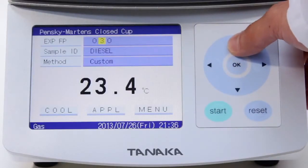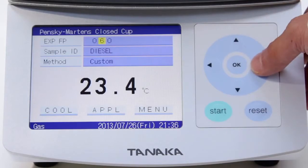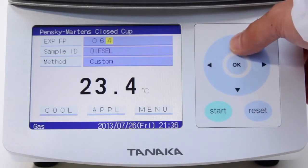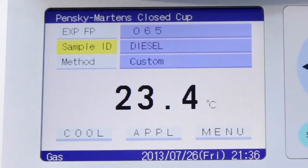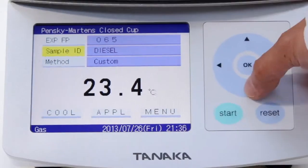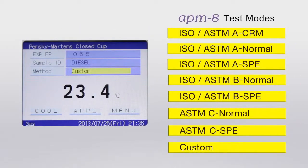There are only 3 steps to perform before starting a test. Enter the expected flashpoint. Enter a sample ID. Then select one of the 8 test modes. The CRM mode, for example, is suited for reference materials, normal modes for ordinary samples and SPE modes for unknown samples.